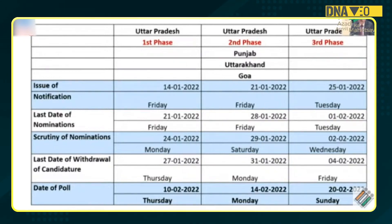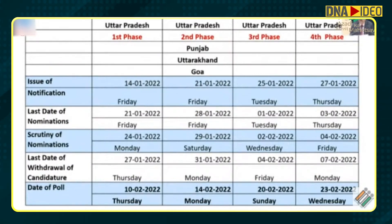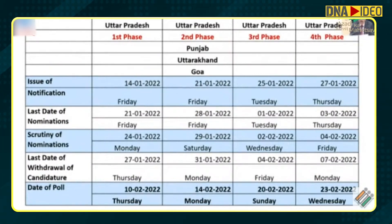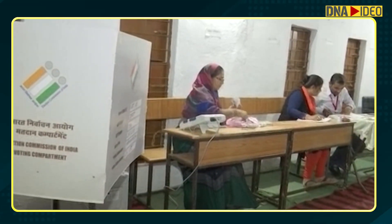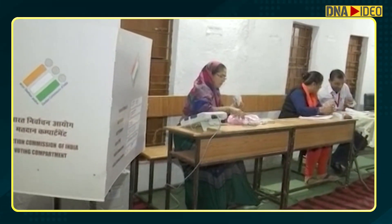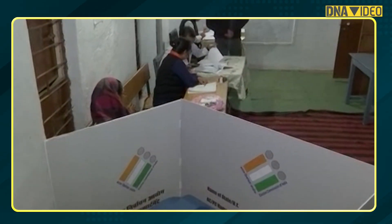Uttar Pradesh fourth phase: issue of notification 27th January. Last date of nominations: 3rd February. Scrutiny of nominations: 4th February. Last date of withdrawal of candidature: 7th February. Date of poll: 23rd February.